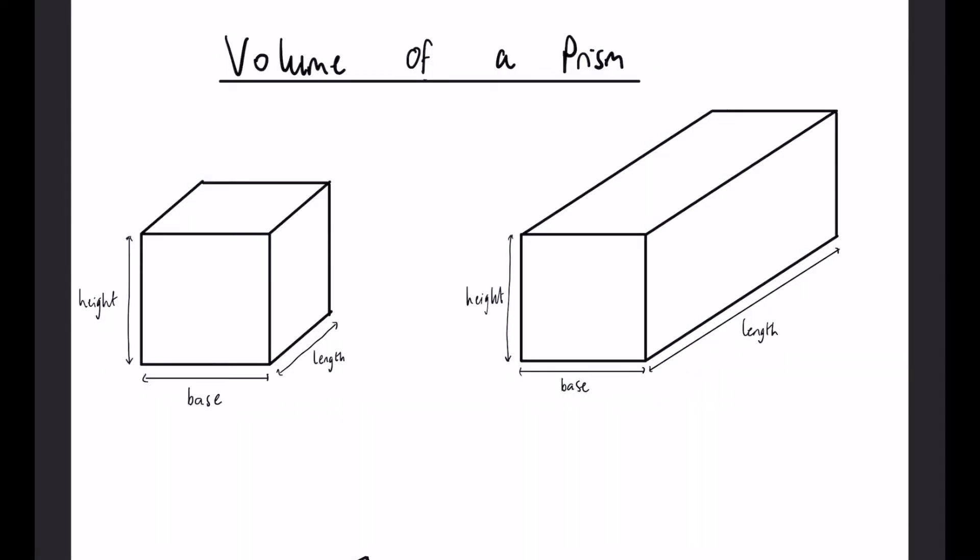In this video, we're going to be looking at the volume of different prisms. Prisms include shapes such as cubes, cuboids, triangular prisms, and cylinders—at least for the standard shapes.